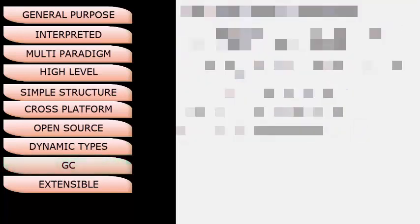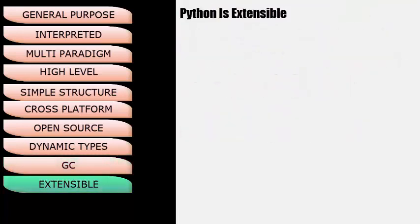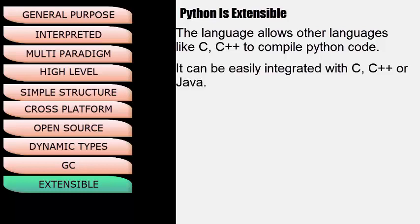Finally, Python is Extensible. This means other languages like C or C++ can be used to compile the code, and Python can be easily integrated with these languages.